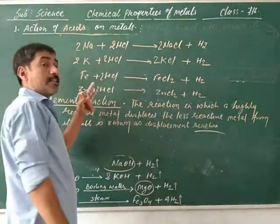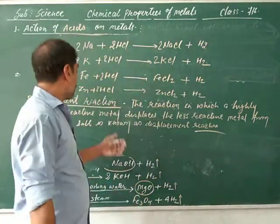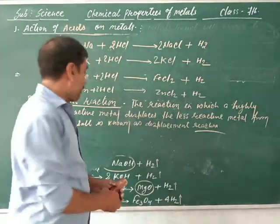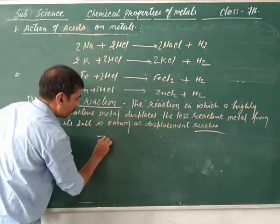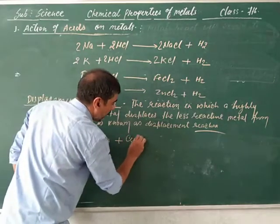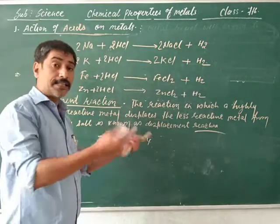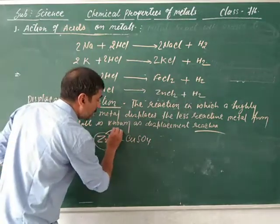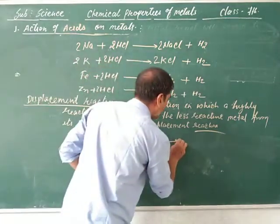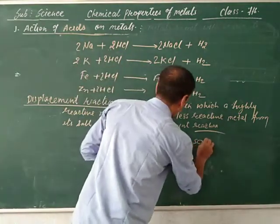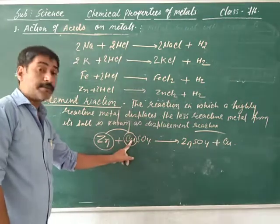What is displacement reaction? Displacement reaction is a reaction in which a highly reactive metal displaces a less reactive metal from its salt. For example, zinc reacts with copper sulfate. Here zinc is more reactive than copper, so zinc displaces the copper from its salt to form zinc sulfate plus copper metal.